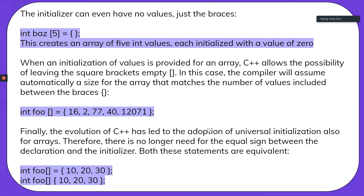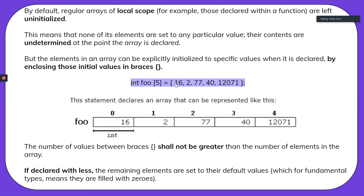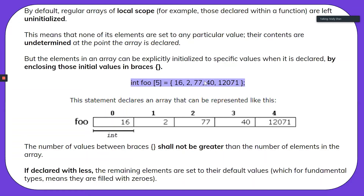The initializer can even have no values — just the braces. This counts as an initialization and all it does is create an array of five int values, each initialized to zero. You don't necessarily have to provide values; with extra spaces, your computer gives a temporary value of zero.